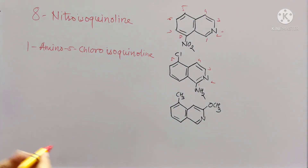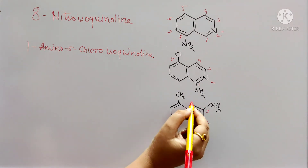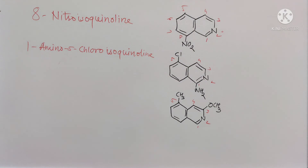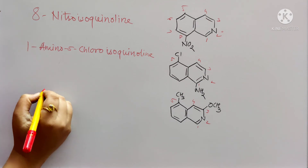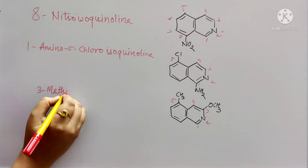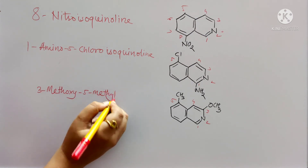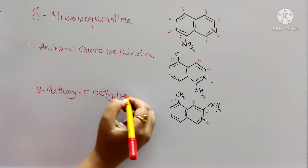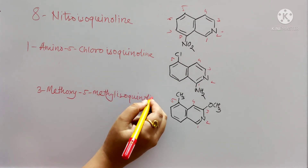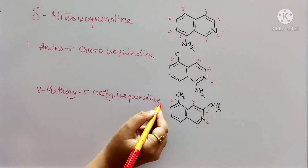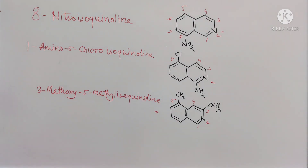Next, give numbering: 1, 2, 3, 4 and 5. To the 5th position methyl group is attached, and to the 3rd position methoxy group is attached. Begin the name with methoxy group: 3-methoxy, 5-methyl, followed by isoquinoline. So this is the way to write the IUPAC names for quinolines and isoquinolines.